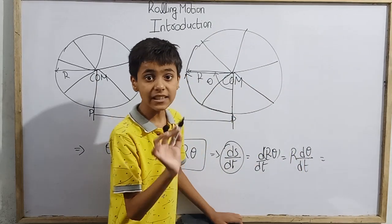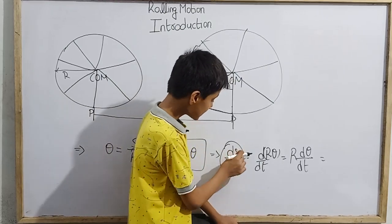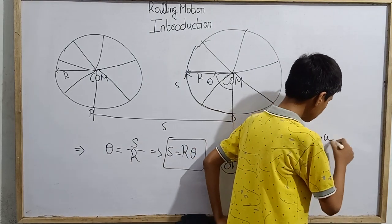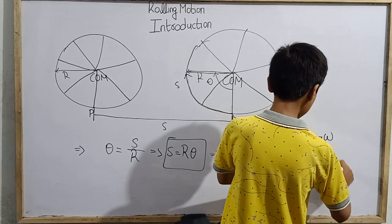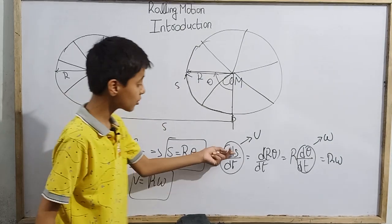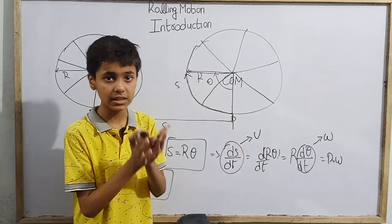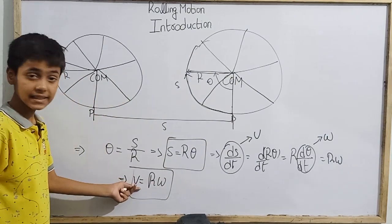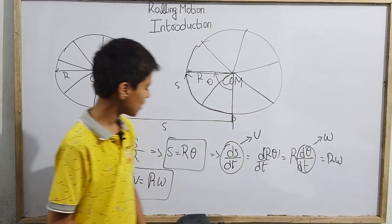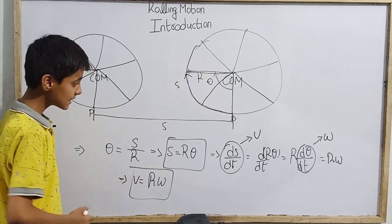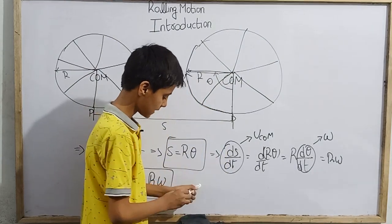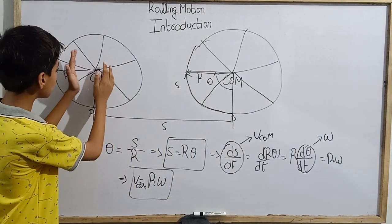Now, the rate of change of distance ds/dt gives us speed, and dθ/dt is the angular speed omega. Differentiating S = R·θ with respect to time, since R is constant, we get V = R·ω. We can also write: average linear speed equals R times average angular velocity. This quantity V is specifically V_COM — the speed of the center of mass.